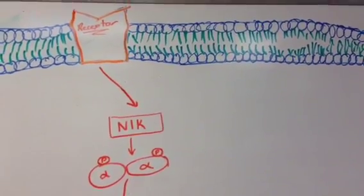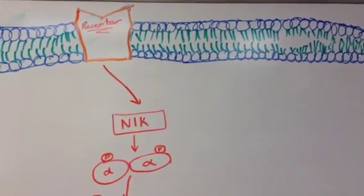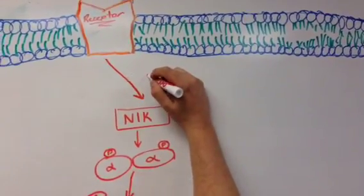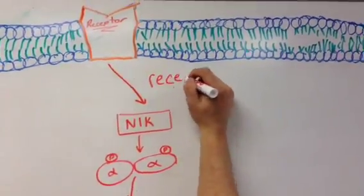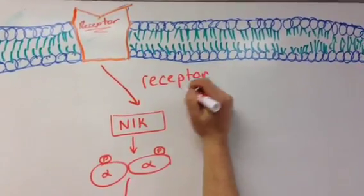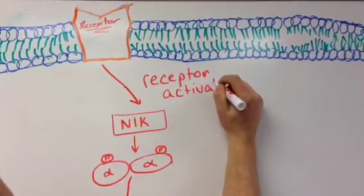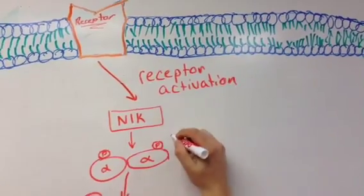This is the non-canonical pathway, or alternative pathway. Receptor binding leads to the activation of NIK, which phosphorylates and activates an IKK-alpha complex.